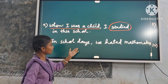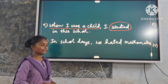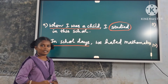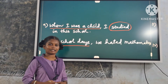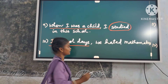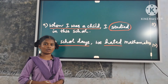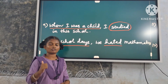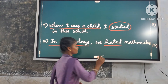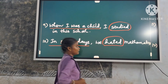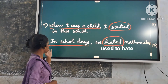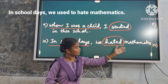Tenth example: 'In school days, we hated mathematics.' Here, 'in school days' is a time expression. But the verb in the main clause is a stative verb — that is, a verb of like or dislike. So we use only 'used to'. Replace it with 'used to hate'. Answer: 'In school days, we used to hate mathematics.'